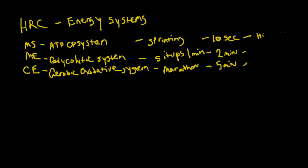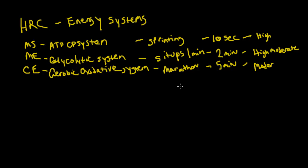In terms of intensity, the ATP-CP system involves extremely high, all-out effort over about 10 seconds — sprinting is a great example. The glycolytic system is high to moderate intensity, something you can sustain for about two minutes before fatigue sets in. The aerobic oxidative system is moderate intensity — continuous and repetitive, but not too high, because if the anaerobic system has to kick in, you'll eventually fatigue and have to stop.